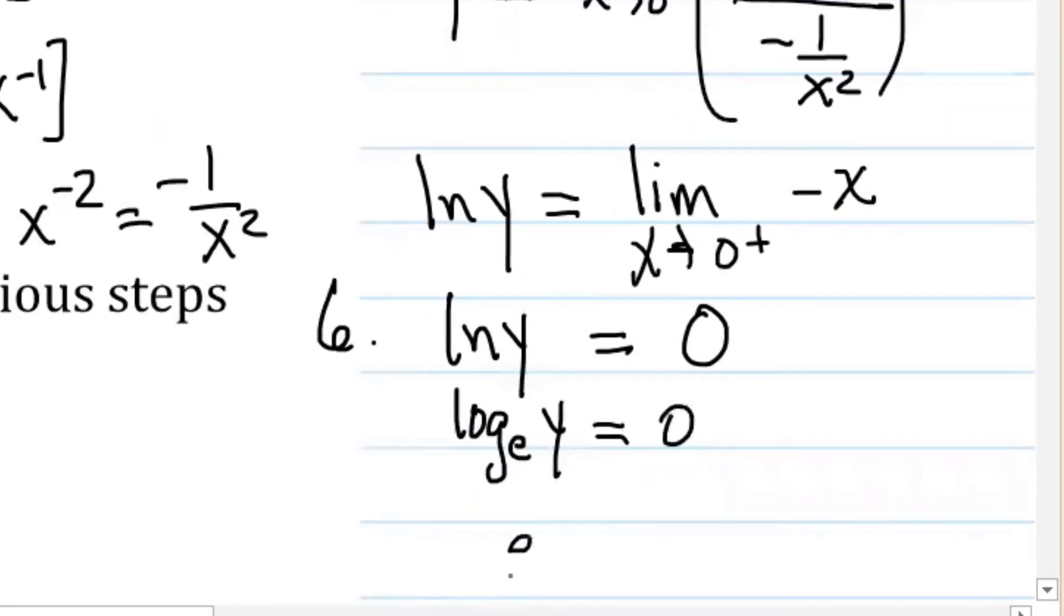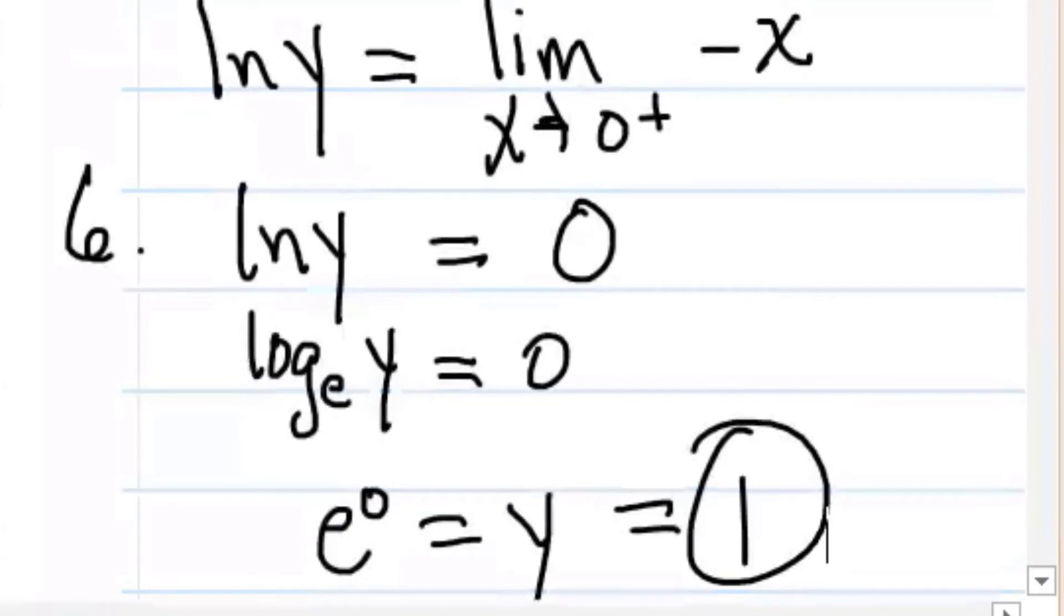That's the same as saying log base e of y equals zero. Or in other words, e to the zero power equals y. So that means y is equal to one. That's the six step process. If you found this video helpful, please give it a thumbs up. That will help other students to find the video.